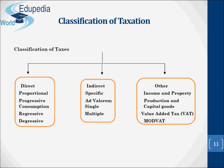Now let's move on to the classification of taxation. Taxes are classified on different bases — the forms, nature, aims, and methods of taxation. The various taxes may be classified under the following major heads: direct taxes, including proportional, progressive, regressive, and degressive taxes; indirect taxes; and other classifications such as income and property, production, and capital goods taxes, including the famous value-added tax, and so on.